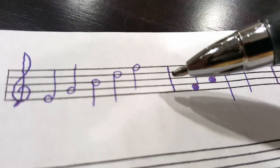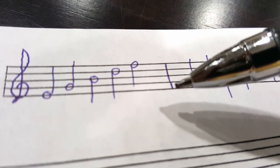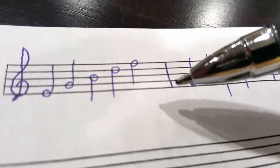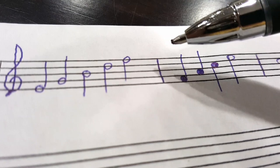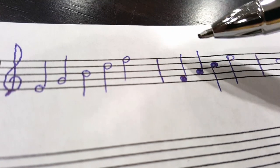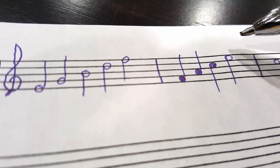The lines that go from the top of the staff to the bottom are called bar lines, and in between two bar lines is what we call a measure.